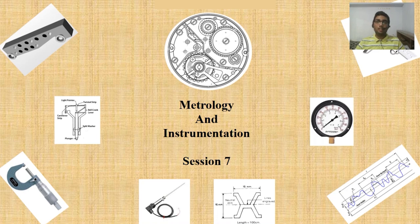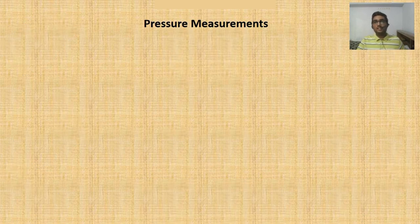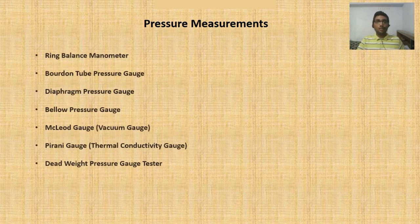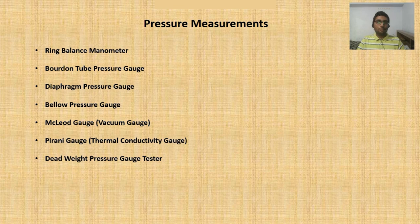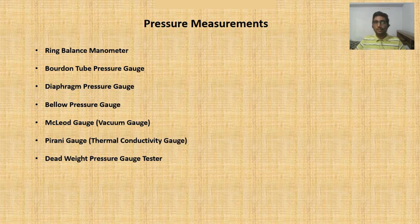In this session we will be taking another topic of Metrology and Instrumentation, which is pressure measurement. The instruments we are going to study are: the ring balance manometer, the Bourdon tube pressure gauge, the diaphragm pressure gauge, bellow pressure gauge, Macleod pressure gauge (vacuum gauge), Pirani gauge (thermal conductivity gauge), and the dead weight pressure gauge tester, which is used for calibration.